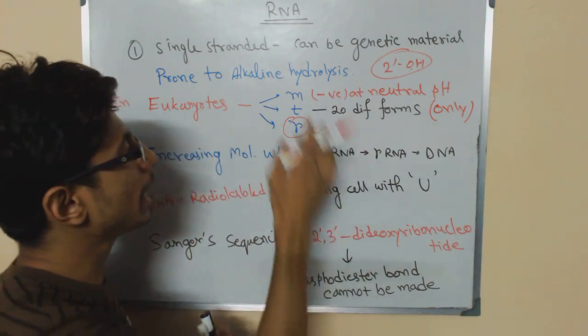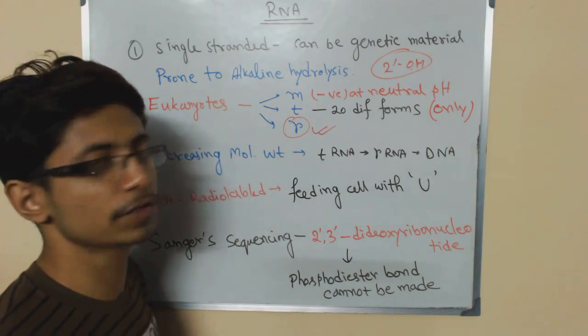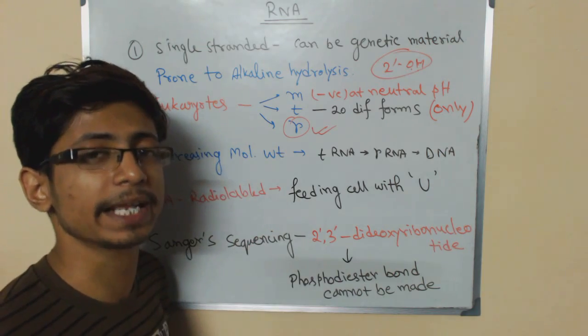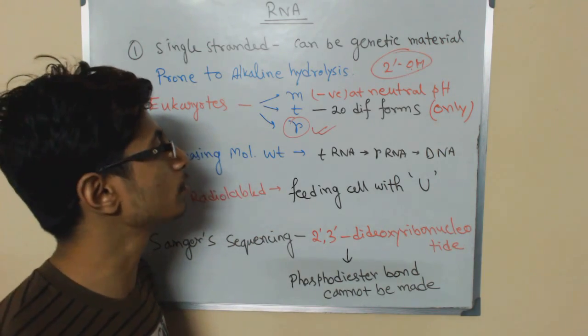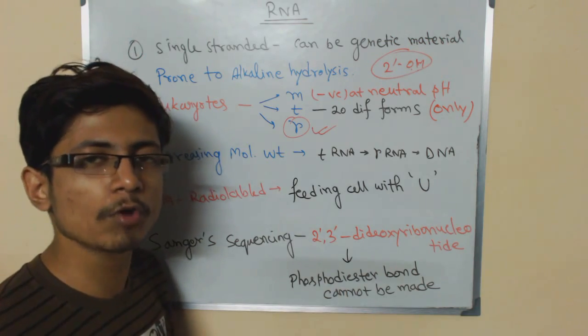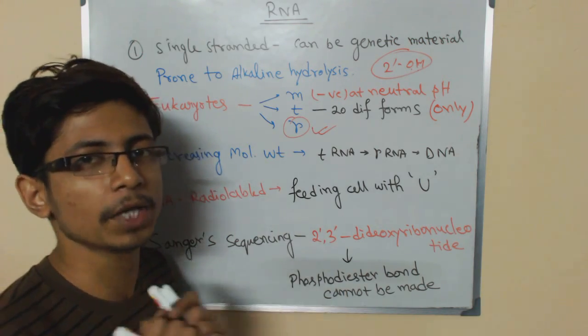On the other hand, tRNA are also present. mRNA is negatively charged RNA at neutral pH, so that's the typical feature of mRNA. The tRNA, there are 20 different types of tRNA that are found, and each of the tRNA are designed to be attached with a specific amino acid sequence.